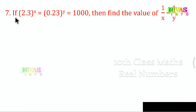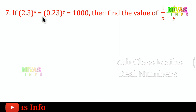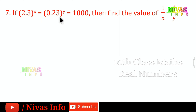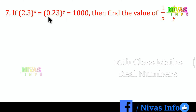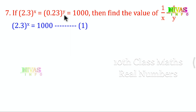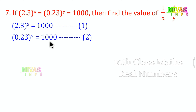Question number 7. If 2.3 to the power x is equal to 0.23 to the power y is equal to 1000, then find the value of 1 by x minus 1 by y. We have two equations: the first is 2.3 to the power x equals 1000, and the second is 0.23 to the power y equals 1000.